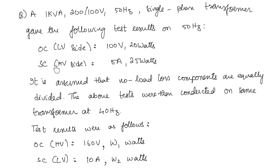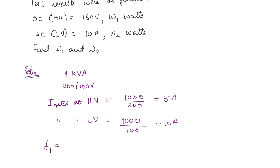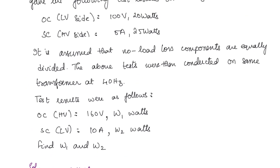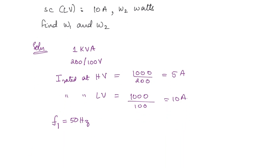For the OC and SC test at F1 = 50 hertz, the tests are done at rated voltage (LV side) and rated current (HV side, 5 A). The core losses from the OC test wattmeter reading are 20 watts, and the full load copper losses from the SC test are 25 watts, since it is performed at the rated value of current.